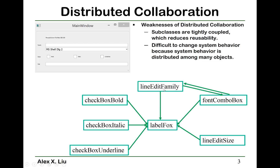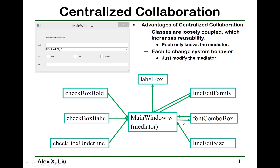You can see that the arrows represent the signals and slots — this one sends a signal, this one needs to receive it, and so on. Line edit family and font combo box impact each other. For distributed collaboration, another disadvantage is that it's difficult to change system behavior because the system behavior is dispersed among many objects. For centralized collaboration, the classes are loosely coupled, which will increase usability.